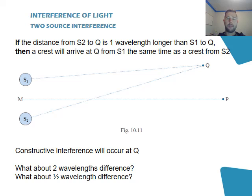Now if the distance from S2 to Q is actually one wavelength longer than S1 to Q, then crests will arrive at the same time, meaning constructive interference at the same time as another crest at point Q. Now if this distance that S2 travels is two wavelengths further, you still get a crest arriving at Q the same time as a crest from S1, meaning it is also constructive.